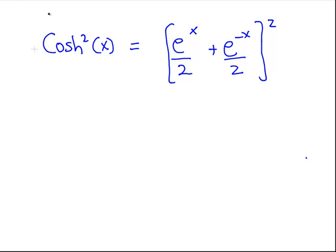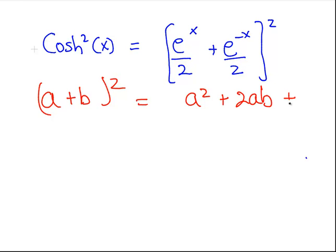So this is just in the form a plus b squared, which is equal to a squared plus 2ab plus b squared.